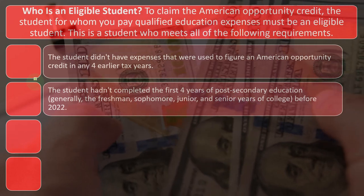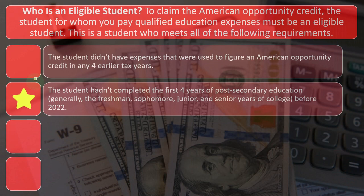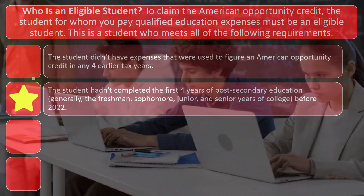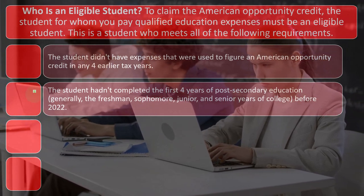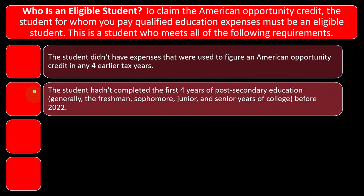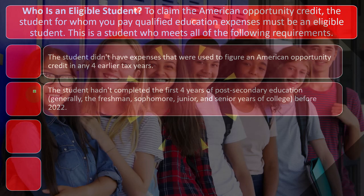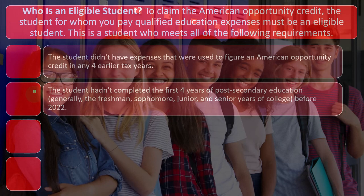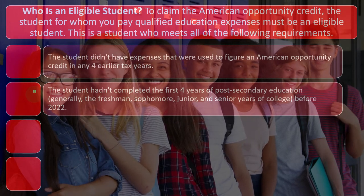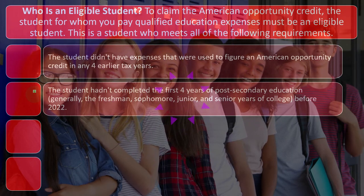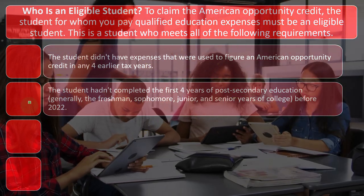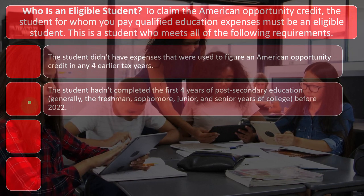The second condition looks similar but is different: the student hadn't completed the first four years of post-secondary education — generally freshman, sophomore, junior, and senior years of college — before 2022. Traditionally, college is packed into that four-year frame, but in practice many people take longer because they're working part-time. Once you're past that threshold, you'd typically be in a master's program, which may not qualify for the American Opportunity Credit. You could, for example, have taken six years to complete those four years but still not have used your four-year credit limit and still be eligible.